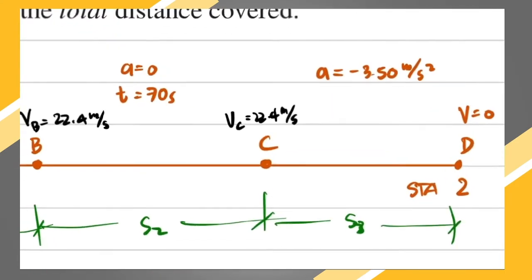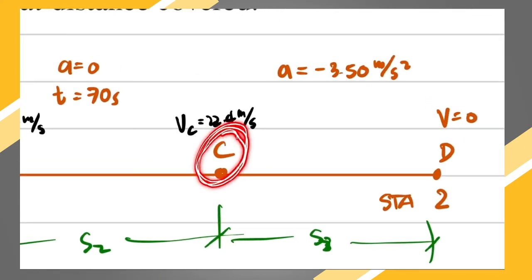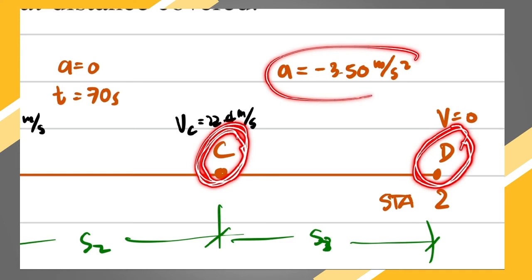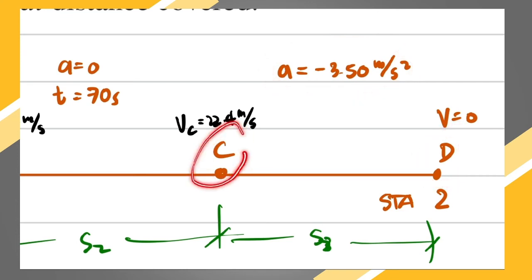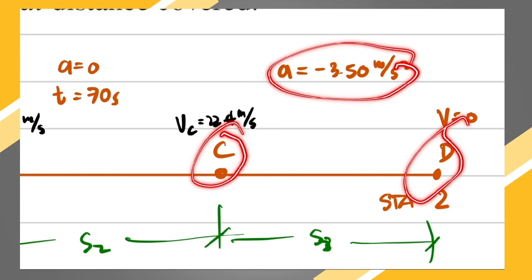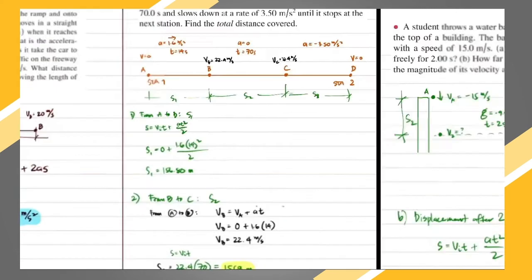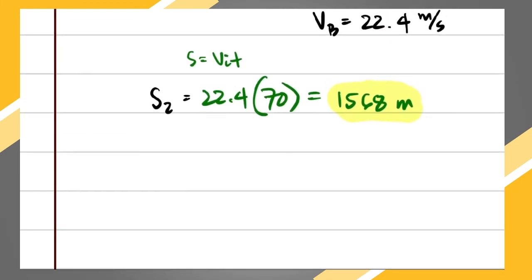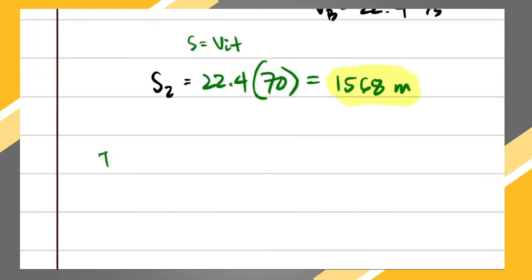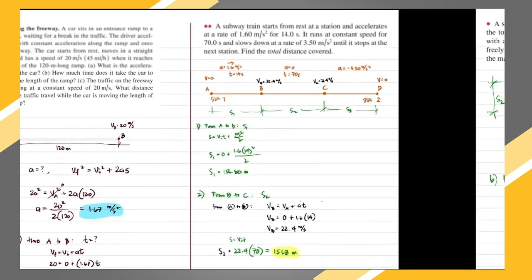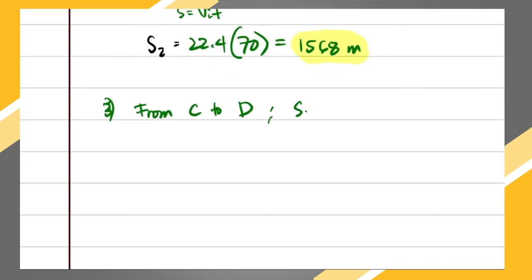From C to D, the initial velocity is 22.4 meters per second, the final velocity is zero, and the acceleration is negative 3.50 meters per second squared. What formula involves initial velocity, final velocity, and acceleration to find distance? That would be the third formula: vf² = vi² + 2·a·s.